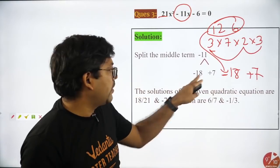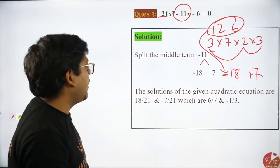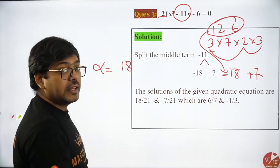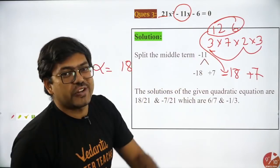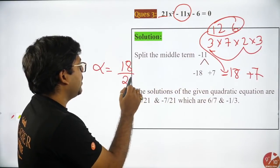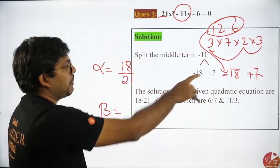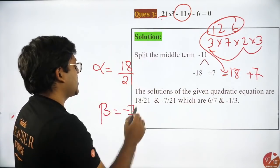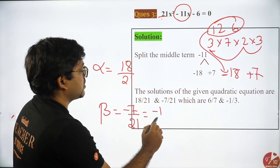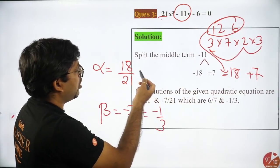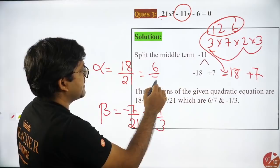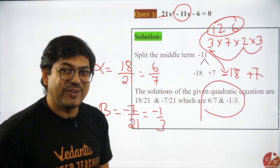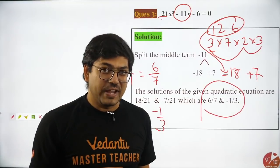You have to get minus 11. So that would be minus 18 and 7. Minus 18 and plus 7, you have got these two numbers. Now, you have to write the first zero. So opposite sign, minus 18 means plus 18 divided by the coefficient of x². So minus 18 by 21. Second zero, opposite sign, so plus 7. That would be minus 7 divided by coefficient of x² 21. So you have got minus 1 by 3. And here you would have got 6 by 7. So 6 by 7 and minus 1 by 3. I hope you all got it.